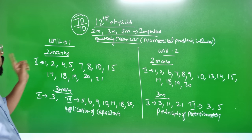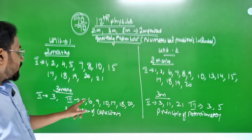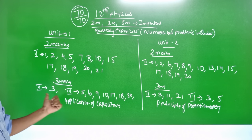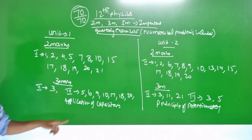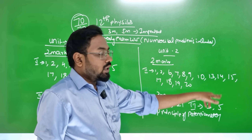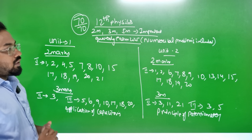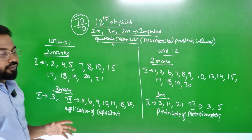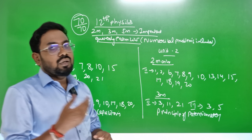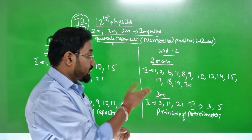In the 2-mark unit, we learned everything from the top, from the book back. Unit 2-mark important questions include: Kirchhoff's law, Peltier effect, Thomson effect, Drift velocity, Resistivity, and Superconductivity. Everything is easy.